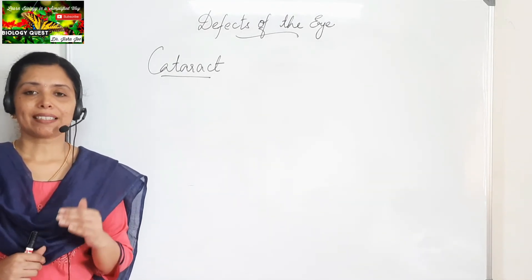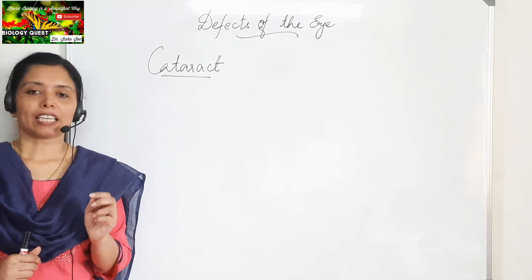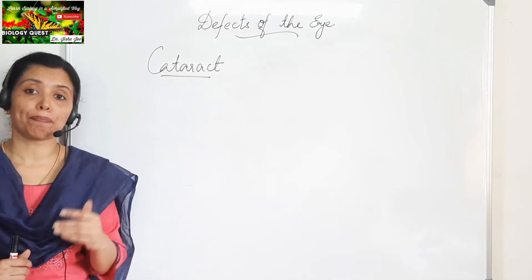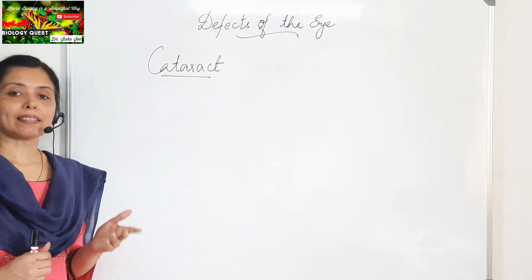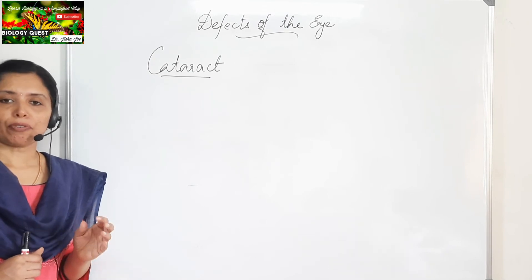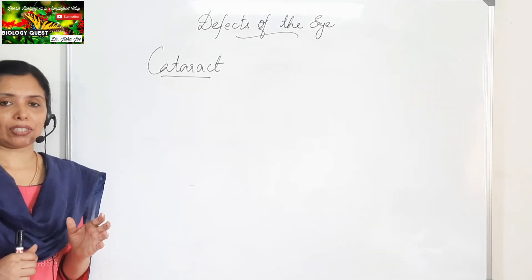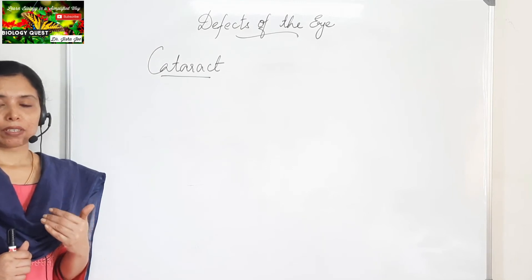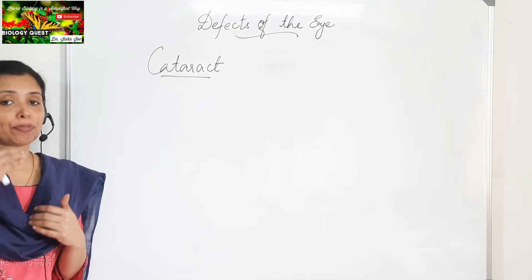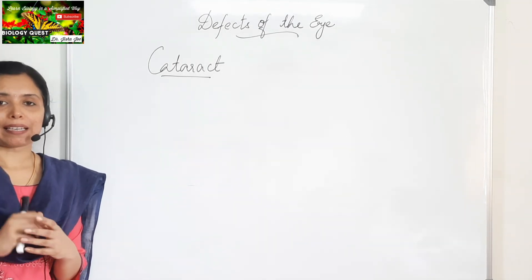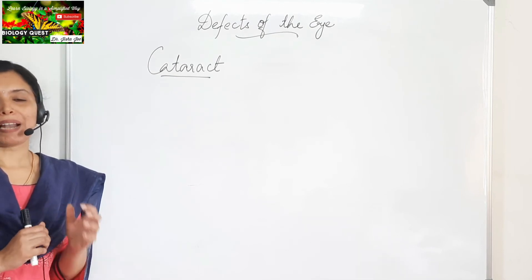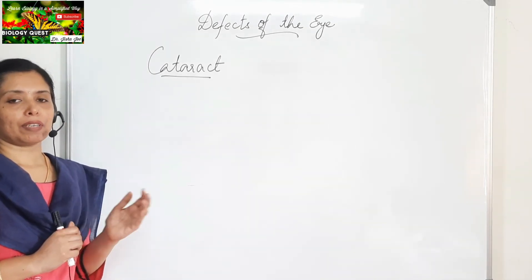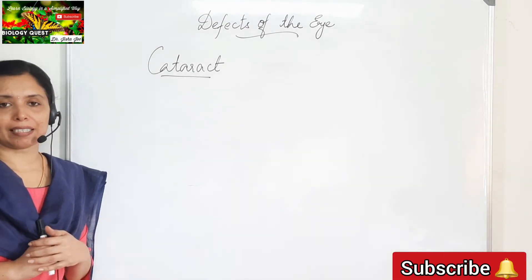The next defect is cataract. Cataract is a condition in which the lens becomes opaque. If not treated at the right time, it will lead to complete blindness because the lens becomes opaque. The treatment for this is surgery — we remove the affected opaque lens and implant a new plastic lens in its place. Highly convex spectacles are also used to rectify this defect.